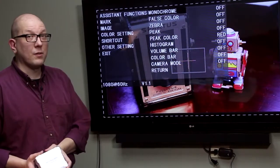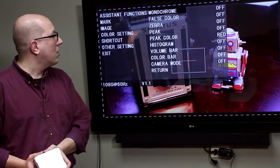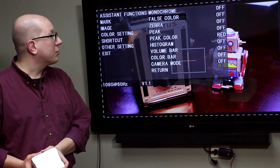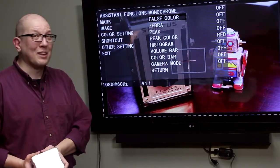Here's your price of admission right here. These are all the cool assistants for when you're shooting. You can go monochrome, you can do false color, which is there to help you with exposure stuff. Let's turn it off because it's a little hard to look at.